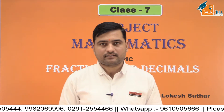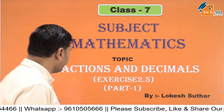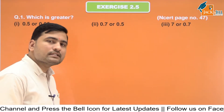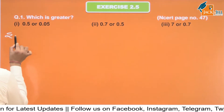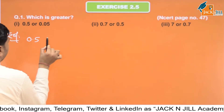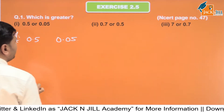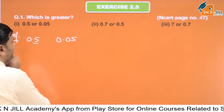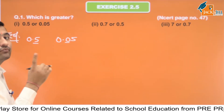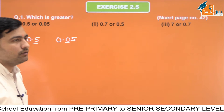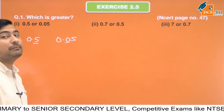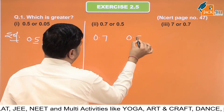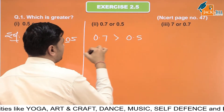2.5 का पहला part करेंगे, second part हम next session के अंदर करेंगे। पहला question हमें क्या कह रहा है? Which is greater? यहाँ पर हमें decimal numbers को compare करना है और बताना है कि कौन सा greater है। 0.5 और 0.05 है। पॉइंट के बाद वाले numbers को compare करना है। पॉइंट के बाद पहला number यहाँ 5 आ रहा है और यहाँ 0 आ रहा है, तो 5 बड़ा है, तो 0.5 greater हो जाएगा। इसी तरह 0.7 और 0.5 में पॉइंट के बाद 7 और 5 है, तो 7 बड़ा तो 0.7 बड़ा हो जाएगा।